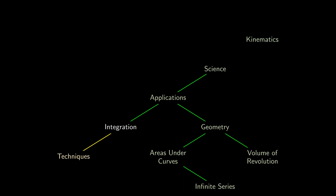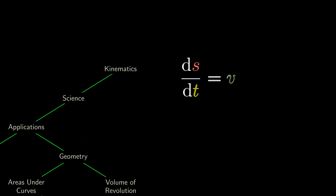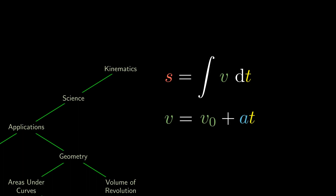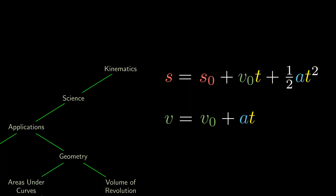A crucial scientific application of integration is in the study of kinematics. The rate of change of displacement is the velocity, and the rate of change of the velocity is acceleration. Integrating on both sides, the displacement is the integral of the velocity, and the velocity is the integral of the acceleration. Furthermore, if acceleration is a constant, then we're going to get the constant v₀ plus a times t. We can plug that into the displacement equation and integrate to obtain s₀ plus v₀t plus half at squared, which gives rise to the famous kinematics equations in physics.